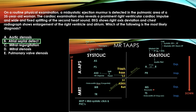The answer to this question is atrial septal defect. The question gives a prominent right ventricular cardiac impulse — ASD is associated with RV impulse — and a wide and fixed splitting of the second heart sound, which is ASD on our chart.